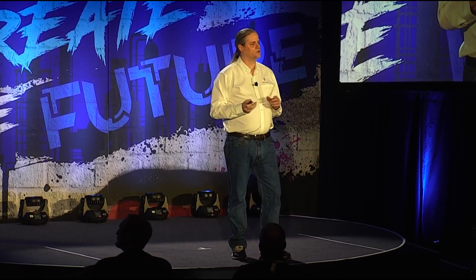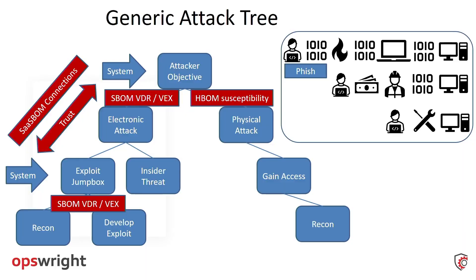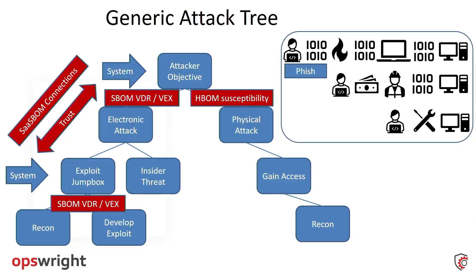We can pull on that thread to understand how to compromise a jump host to ultimately get to the target. For a non-digital attack, we can use this approach for physical attacks as well. If I have an end system with physical characteristics — a lock that can be bypassed — and I can achieve my objective by breaking into a substation and bypassing the lock, then the H-BOM gives me visibility. Maybe I know there's a defect in a particular locking mechanism that's easy for an adversary to bypass — forget all the digital stuff and go the old school route.